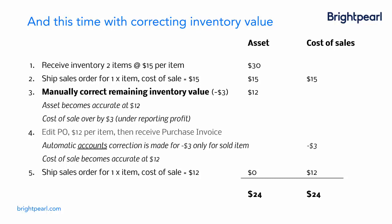The cost of sale is still over by $3 because that original sale is not corrected — leave that as is. Later, when you receive the purchase invoice at $12 per item, you edit the purchase order and receive the purchase invoice. Brightpearl can see that only one item had the cost of sale at $15 (because you've corrected the other), so it only puts a $3 correction in. The cost of sale now becomes accurate at $12 — one step earlier than before — and the assets have gone to zero with total cost of sale at $24. Everything washes out once all invoices are received and goods shipped.